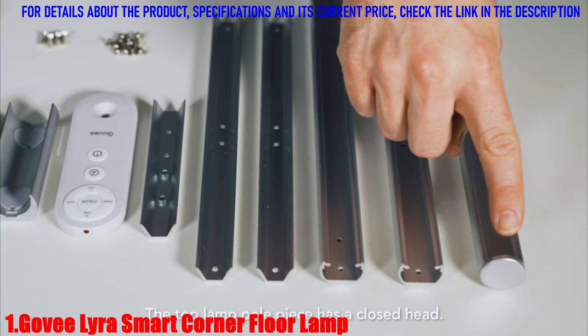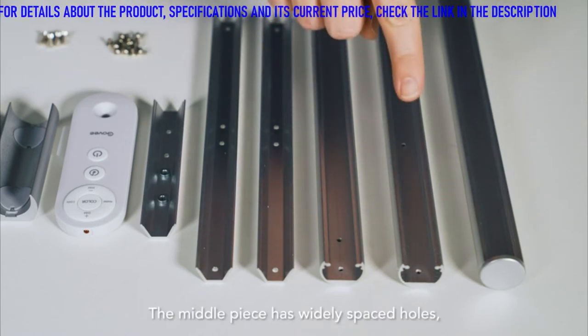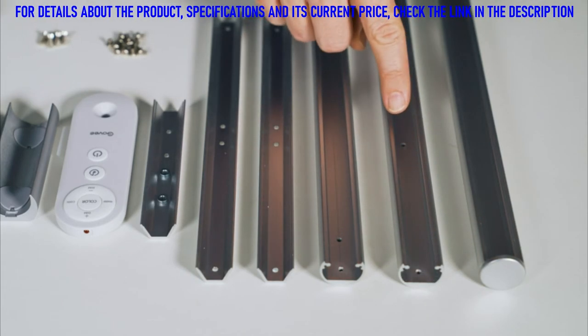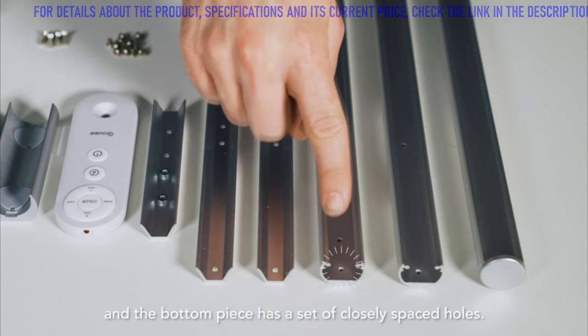The top lamp pole piece has a closed head, the middle piece has widely spaced holes, and the bottom piece has a set of closely spaced holes.